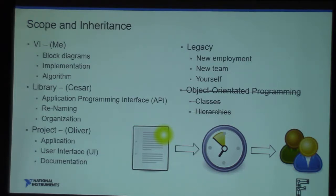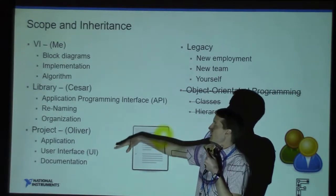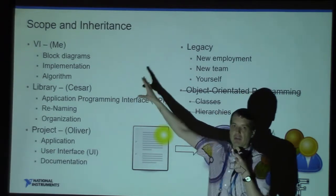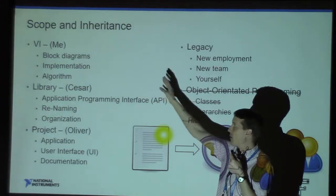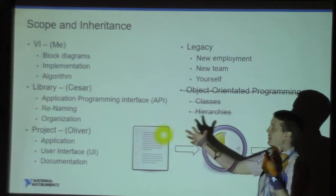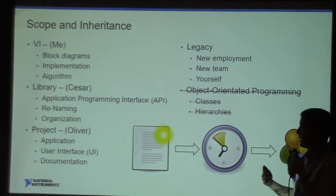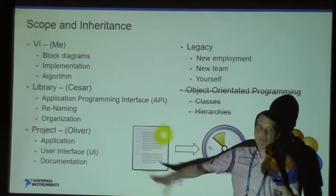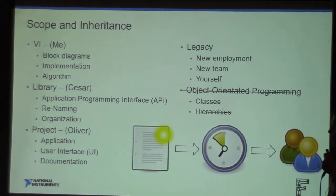This led to a discussion among the three of us about scope, and we defined refactoring scope in three sections. I'm going to talk about the VI and the block diagram — the implementation or algorithm level. Cesar will talk about the library level: when you have a grouping of VIs, how do you refactor that to maintain behavior but make it easier to maintain. And Ollie will show a full-size application that he's been refactoring the entire thing.